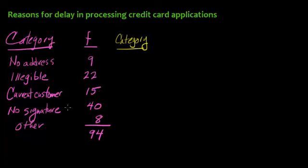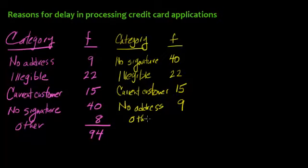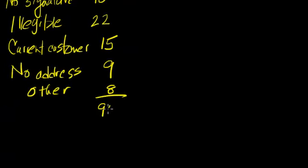What we want to do first is reorder the data with the highest frequency category first to the lowest frequency category. Our highest frequency was no signature at 40, next was illegible at 22, then current customer at 15, no address at 9, and other at 8, for our 94 applications.